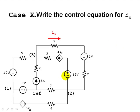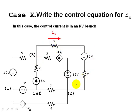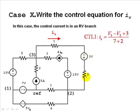Case 9 (next scenario): the current is the current through this 7-ohm resistor at the top. That is the current in an RV branch, and we know what it is: IX equals V3 minus V2 plus 3 volts, divided by 7 plus 2. That is our control current equation.